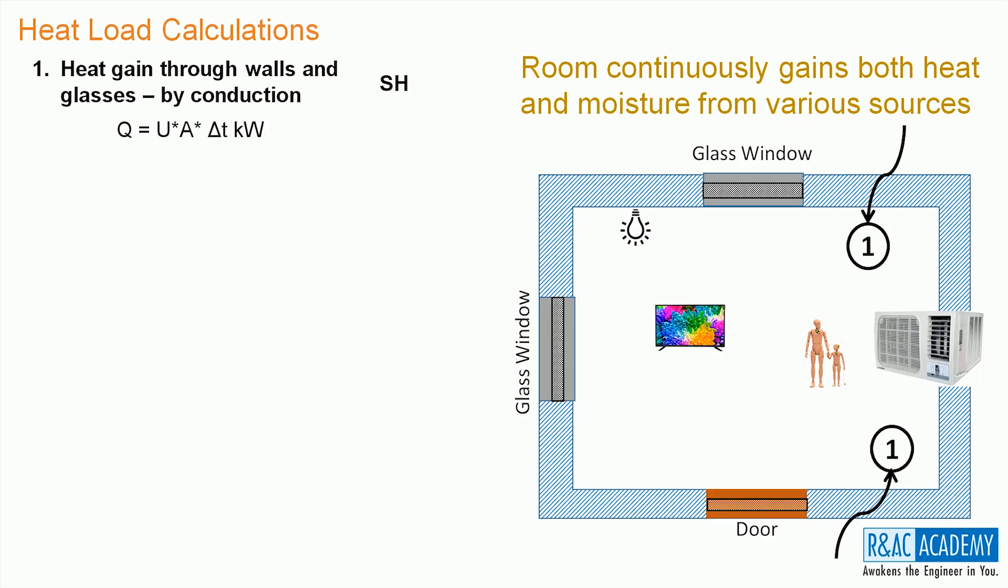This is the expression that is used to compute the heat gained by the room through this source. Q equals UA delta T gives us the heat gain through walls and glasses in kilowatts. Here, U is the overall heat transfer coefficient: 1 by HI plus T by K plus 1 by H0. HI, K and H0 can be had from the data tables. T is the thickness of the wall or thickness of the glass.